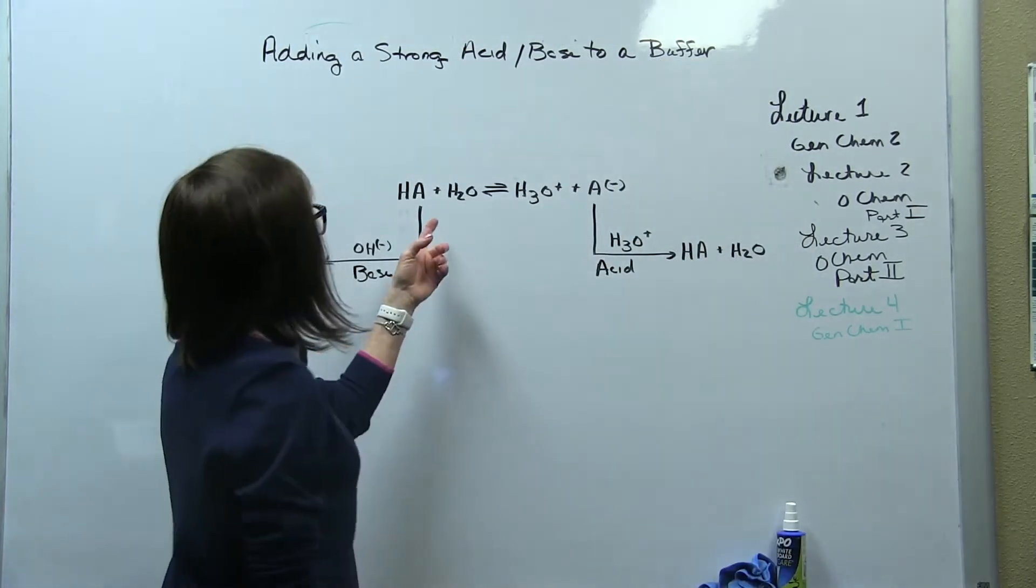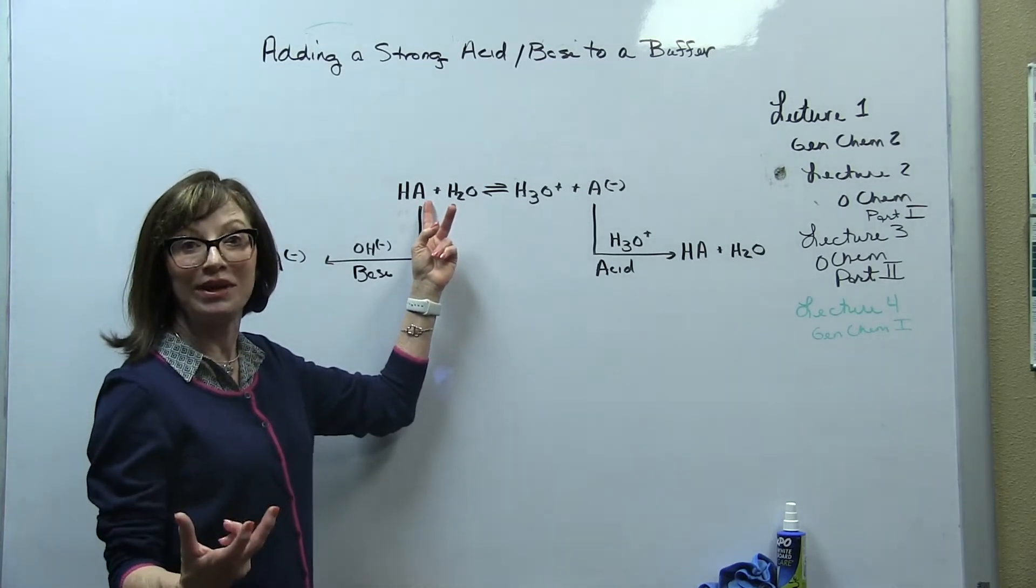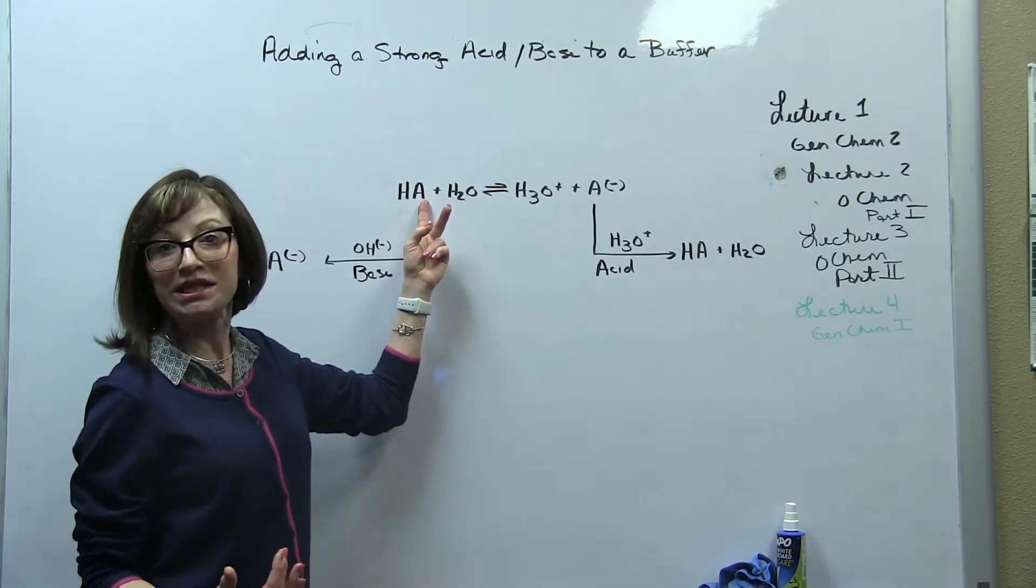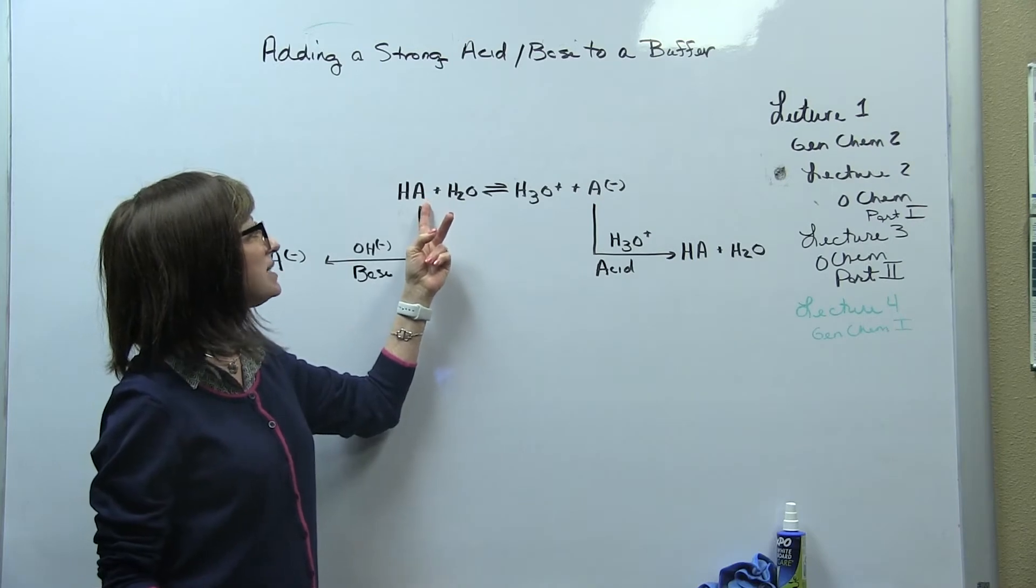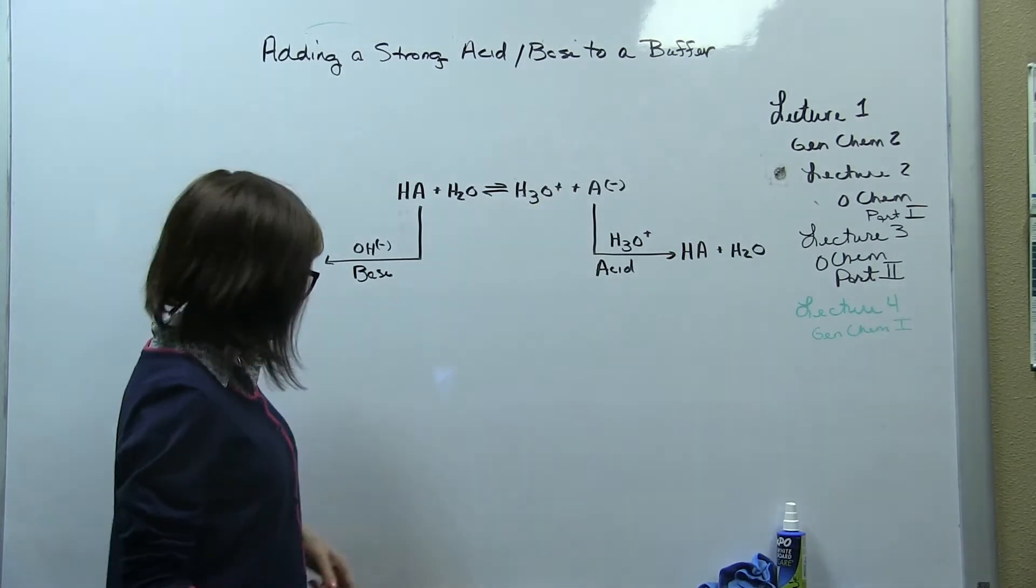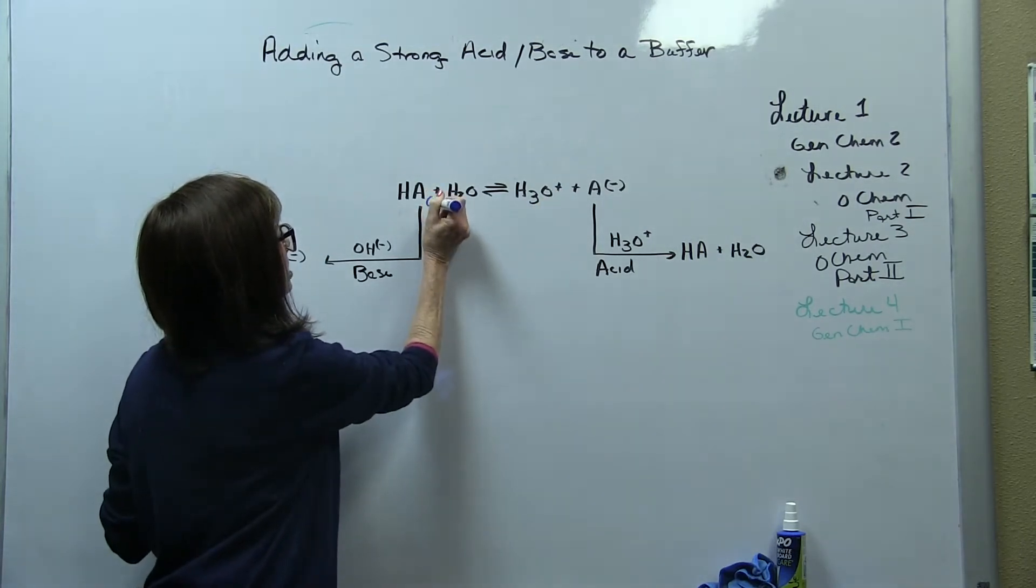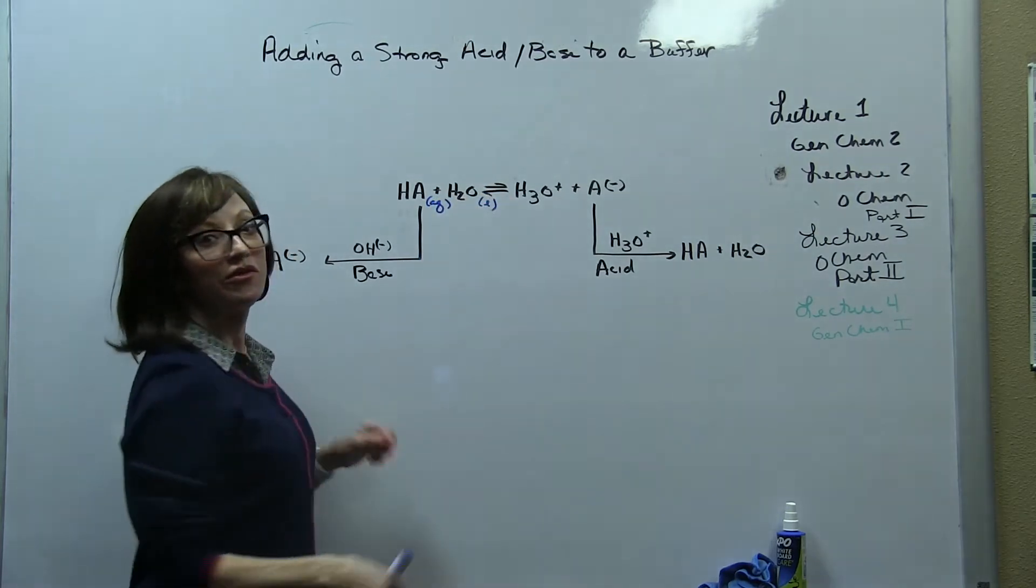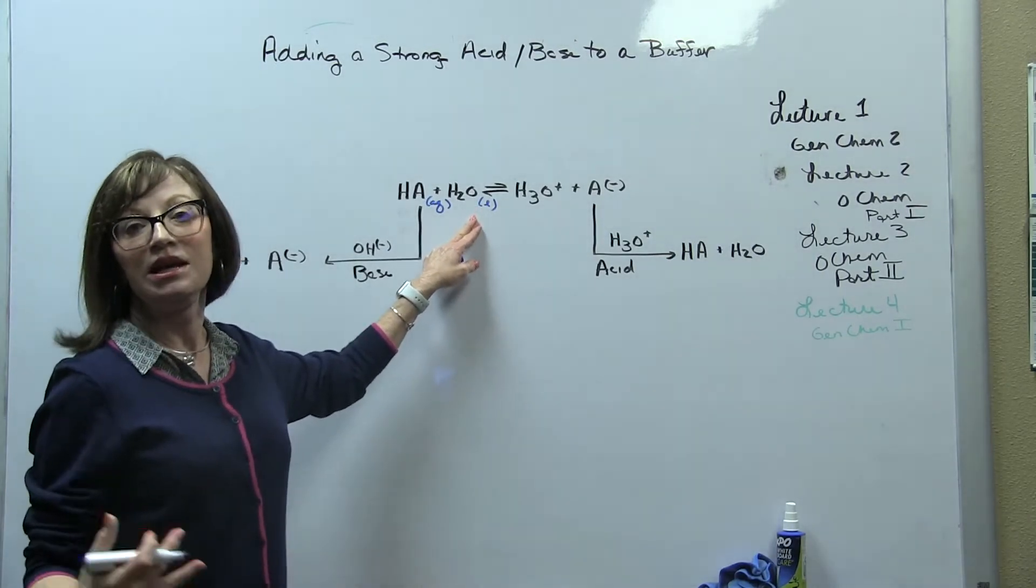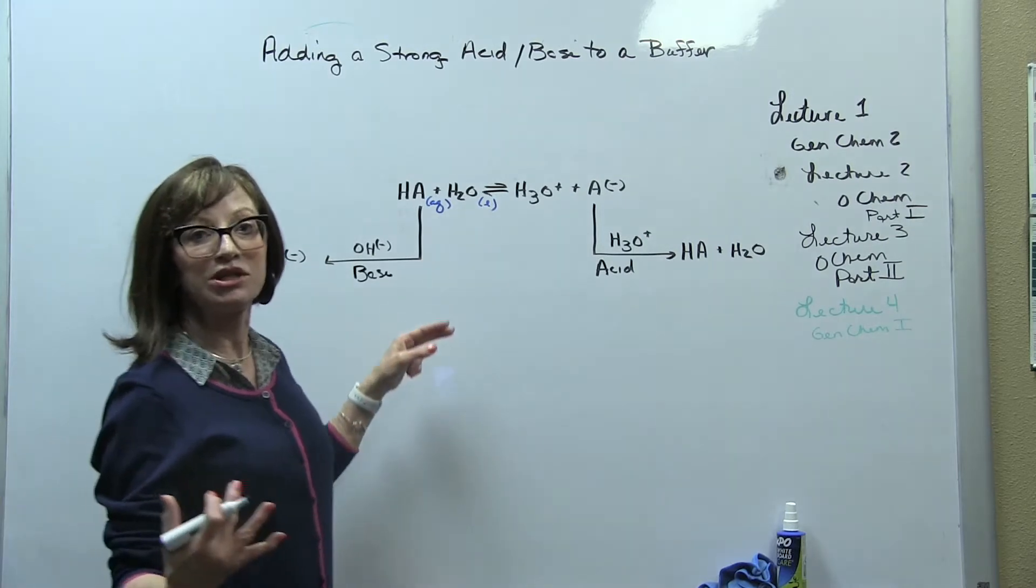So we have our general equilibria for a weak acid. I'll call it HA where A can be any conjugate base. In this case, A is CH3CO2 in regards to acetic acid. And we know that with water it reacts to give you H3O plus and A minus. Now I'm going to put my states in here because we know that's important for the equilibria expression because pure liquids and pure solids don't go into the equilibria expression when we have a heterogeneous mixture.